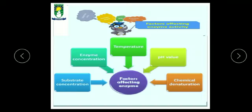Today our topic is factors affecting enzyme activity. Enzymes are very sensitive to the environment in which they work. Any factor that can change the chemistry or shape of an enzyme molecule can affect its activity. If the shape of the enzyme is changed, then enzyme activity can affect the rate of enzyme action. Some of the factors that affect the rate of enzyme action are temperature, pH value, chemical denaturation, substrate concentration, and enzyme concentration.